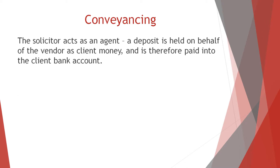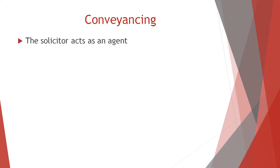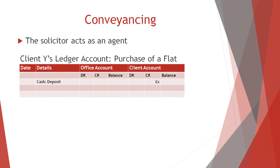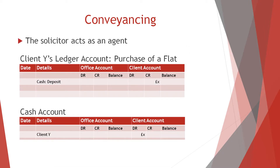When this happens, a deposit is held on behalf of the vendor as client money and is therefore paid into the client bank account. The agent may then pass the money to the seller at any time, so the buyer may have difficulty recovering the deposit in the event of default by the seller. The double entries are: debit the cash account to the value of the monies, client section; credit the client's ledger, both in the client section.